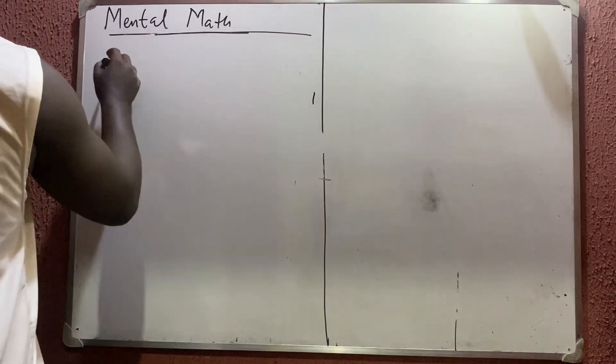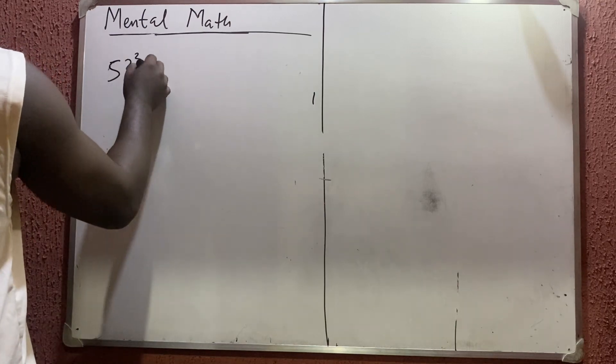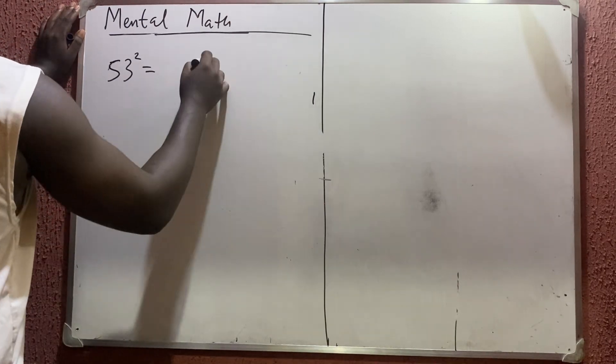The next one: 53. 53 squared. 3² is 9, so write as 09. 5² is 25. 25 plus that 3 I'm seeing, which is 28. Very simple.